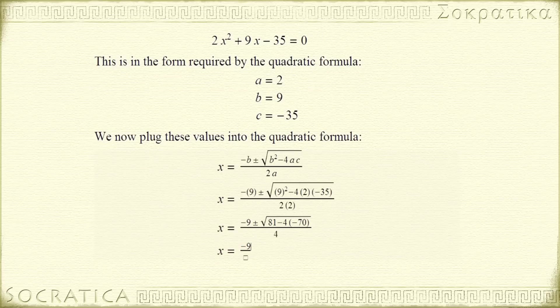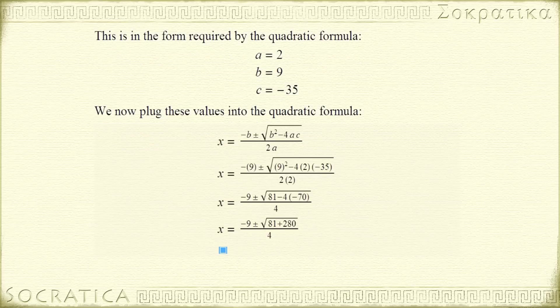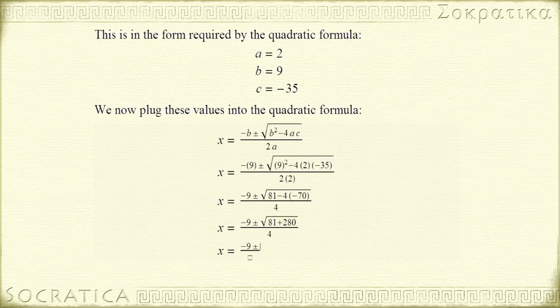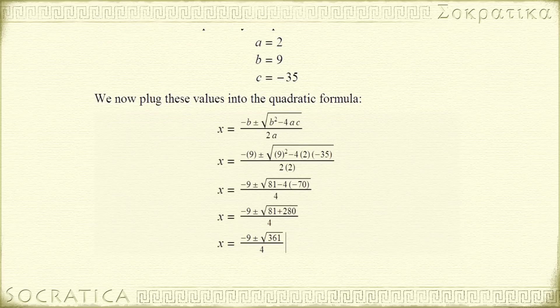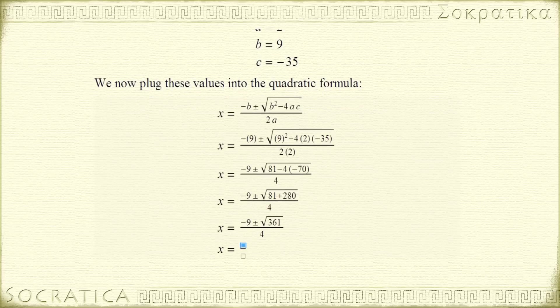Let's keep simplifying the number under the square root sign. We now have x equals negative 9 plus or minus the square root of 81. Here, 4 times negative 70 is negative 280, and when you subtract a negative, that's the same thing as adding. So that gives us the square root of 81 plus 280, all over 4, which gives us negative 9 plus or minus the square root of 361, all over 4. The square root of 361 is 19, so we now have x equals negative 9 plus or minus 19 over 4.